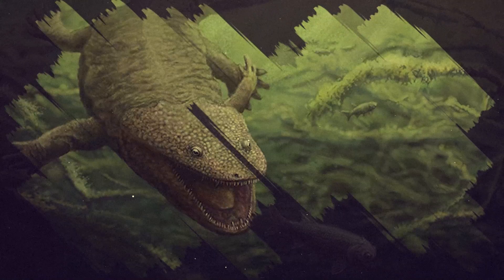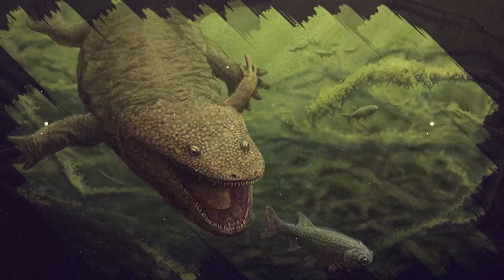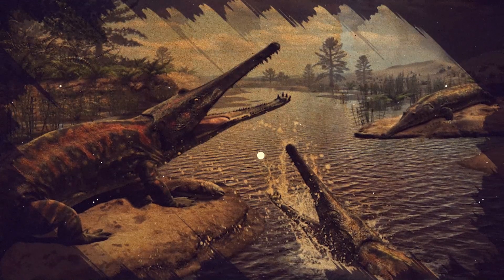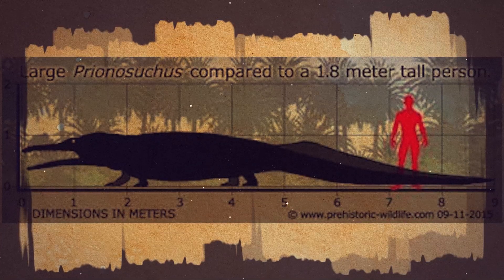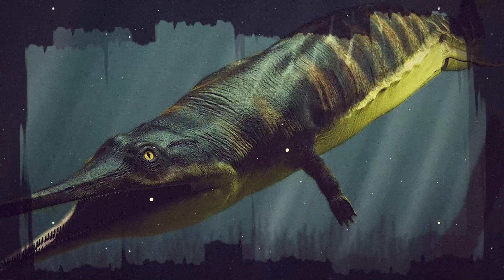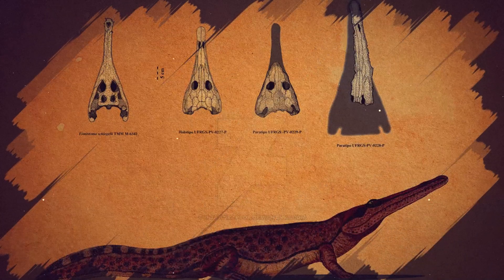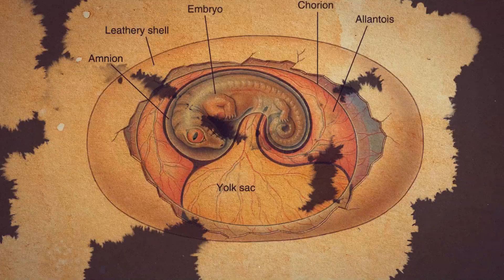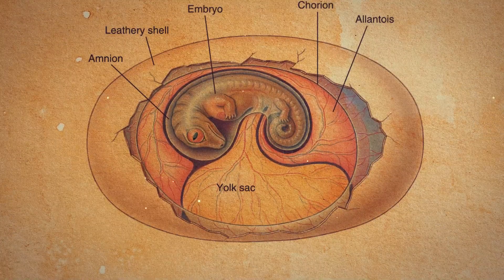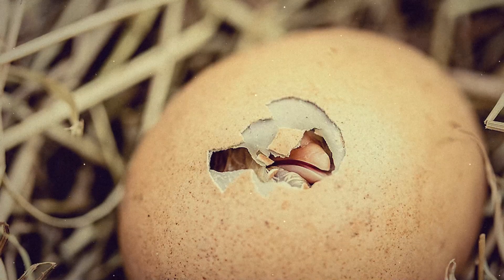The Carboniferous period is sometimes referred to as the Age of Amphibians, as these creatures were the dominant terrestrial vertebrates for much of this timeline. Amphibians were becoming larger and more diverse, with some species resembling modern crocodiles that could grow up to nearly 20 feet long with sharp teeth. During this period, amphibians began to develop thicker, scaly skin, helping them retain moisture and spend more time away from water. They also evolved a specialized type of egg called the amniote egg, which had a membrane that retained fluid and allowed gas exchange, protecting the developing embryo — a crucial step in the evolution of fully terrestrial vertebrates.